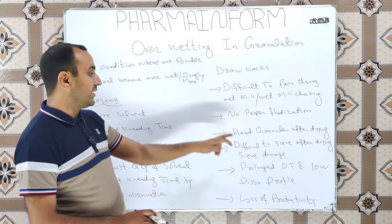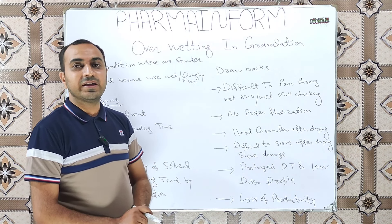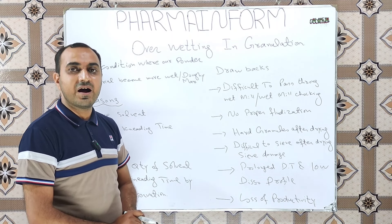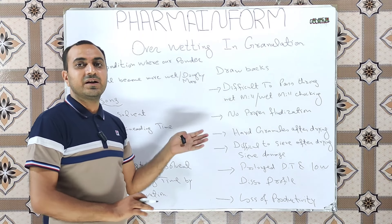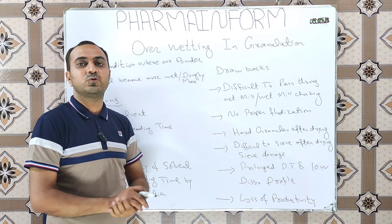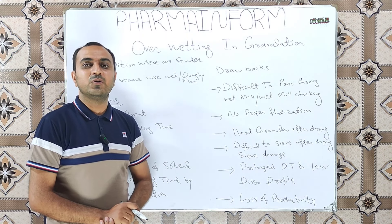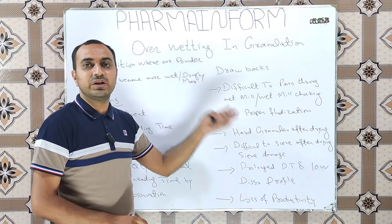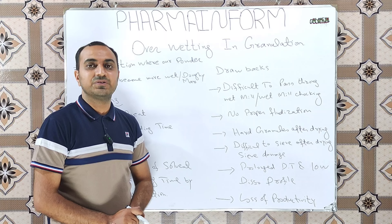After drying, the overwet mass results in production of hard granules. These hard granules are very difficult to pass through the sieve during sieving of dried mass, and it also results in sieve breakage or sieve damage.